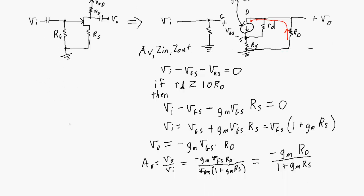For the input impedance, any voltage applied at the input causes all current to flow through RG, so Zin equals RG. For the output impedance, the current source is open-circuited and little RD is ignored, so Zout is approximately equal to big RD. Those are the three values: input impedance RG, output impedance RD, and voltage gain negative GMRD divided by (1 plus GMRS).